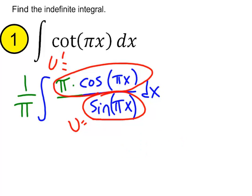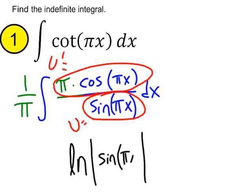So, we anti-derive. We know this is going to give us ln of the absolute value of u, which in this case is sine pi x. That 1 over pi comes along for the ride. And we do a plus c.